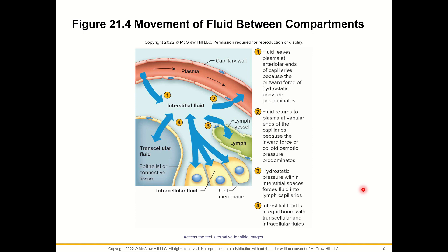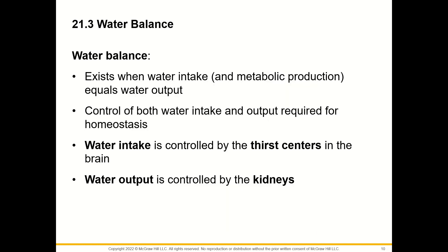In step 1, fluid leaves the plasma at arteriolar ends of capillaries because the outward force of hydrostatic pressure predominates. In step 2, fluid returns to the plasma at the venular ends of capillaries because the inward force of colloid osmotic pressure predominates. In step 3, hydrostatic pressure within interstitial spaces forces fluid into lymph capillaries. In step 4, interstitial fluid is in equilibrium with transcellular and intracellular fluids.